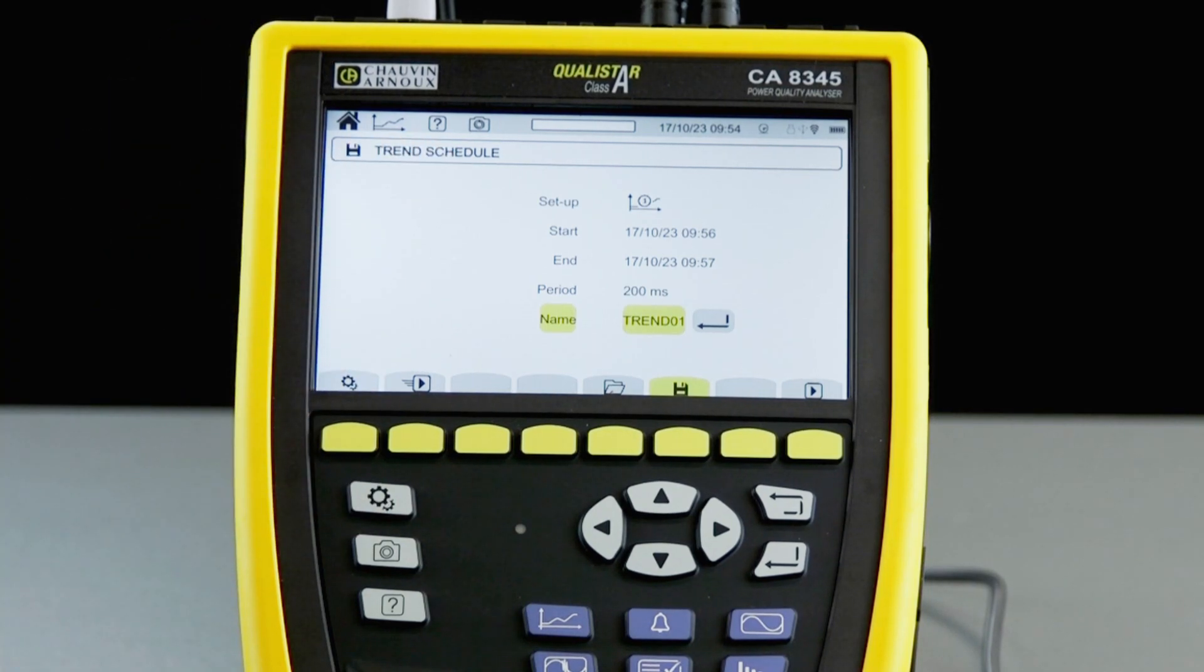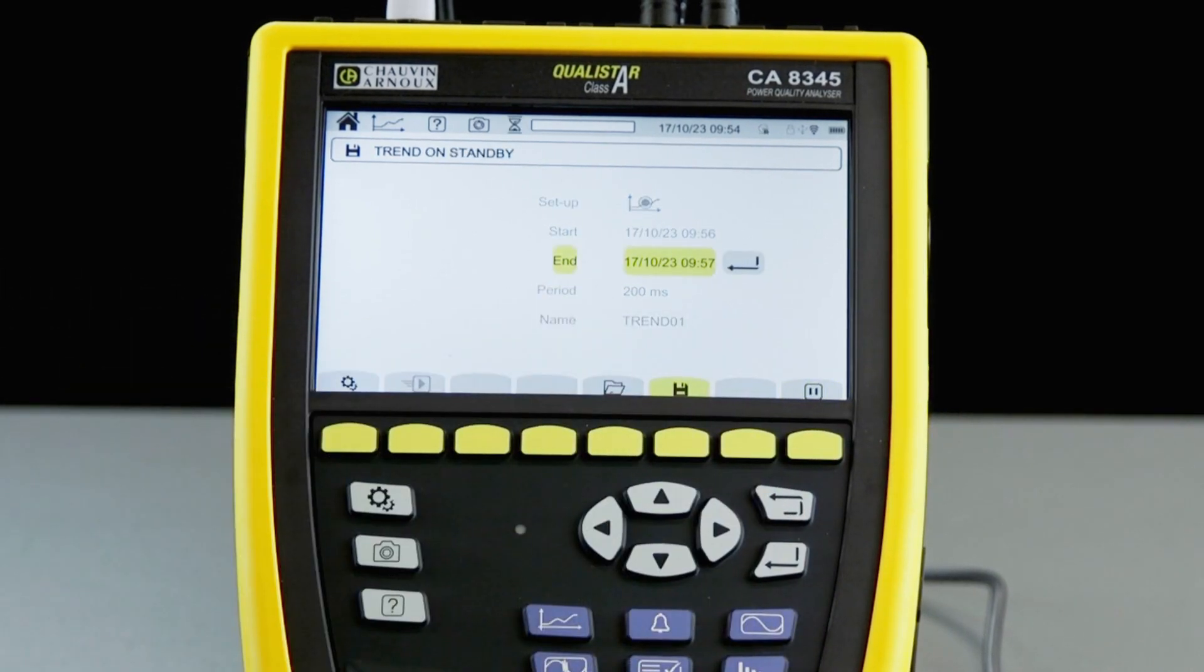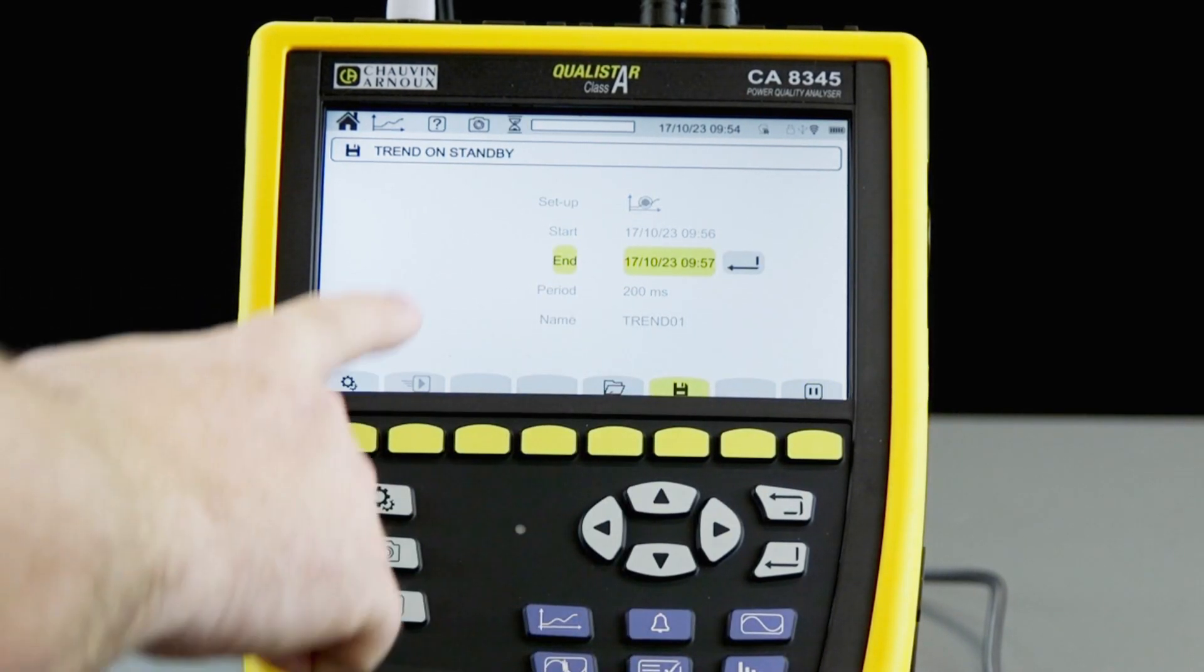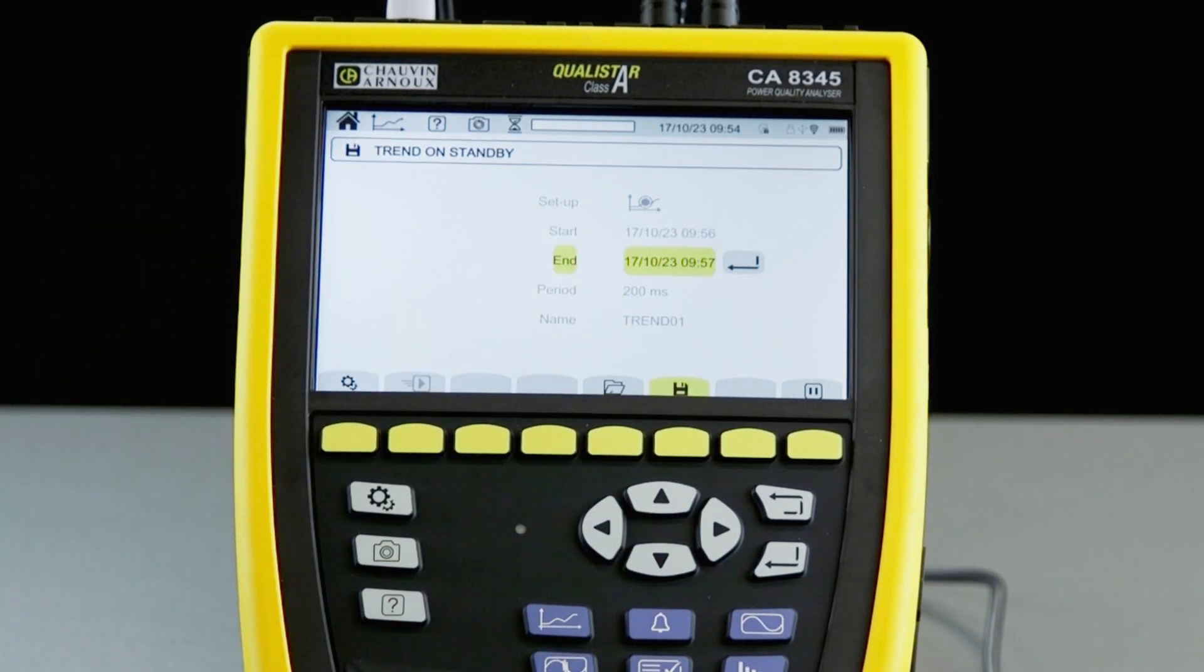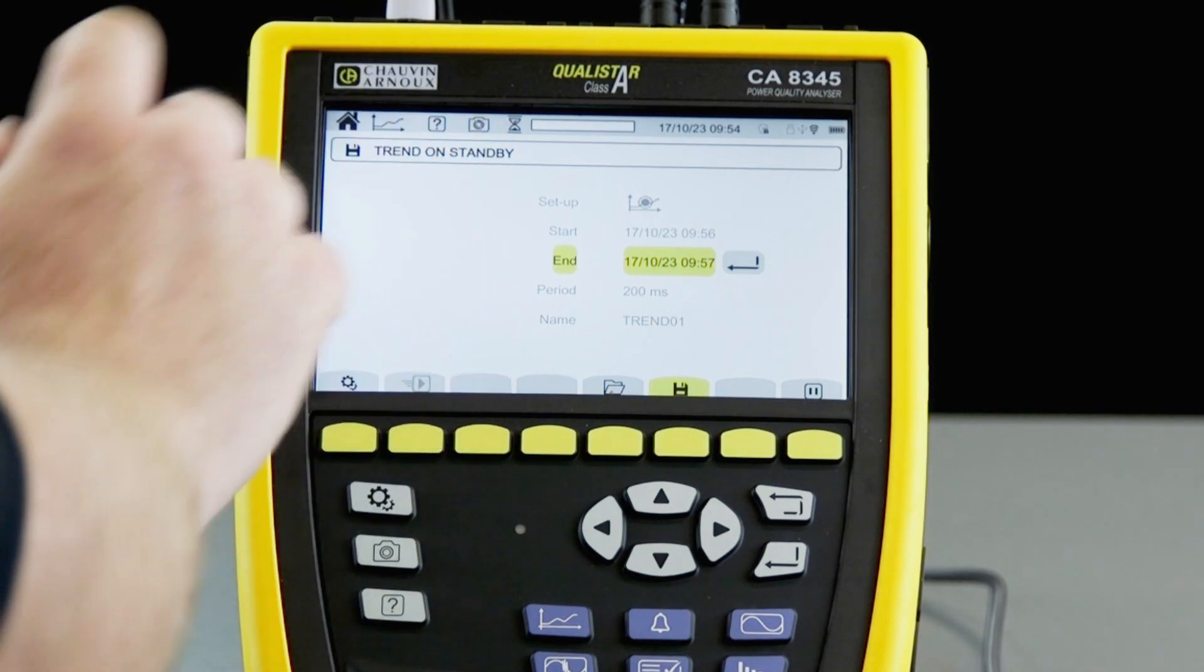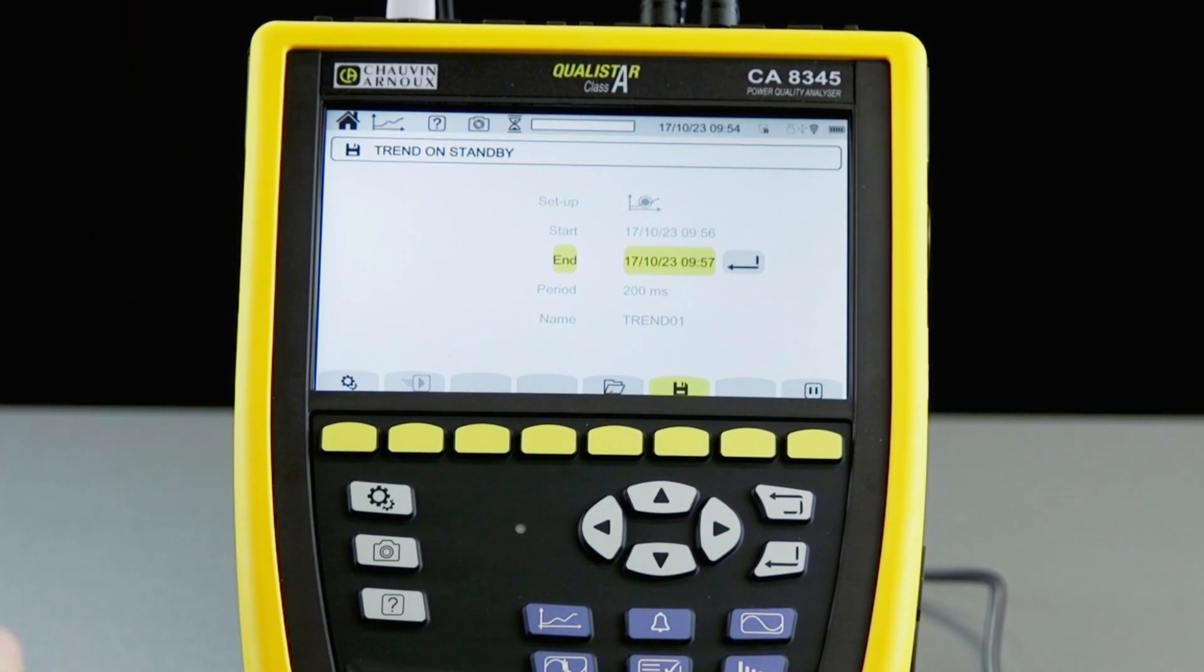Once we have set this up to start the logging session, we press the play key. And you will notice that we get an egg timer icon waiting for the start time to happen. Once the start time happens, this will change to a play icon and it will tell us that the logging session is in progress.